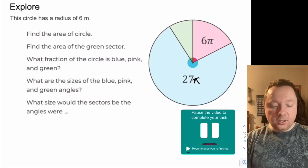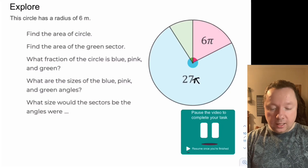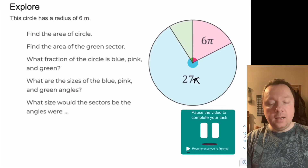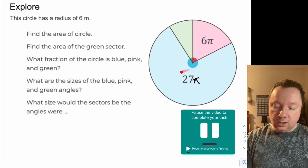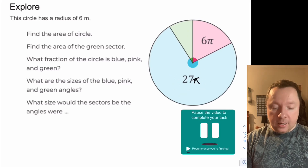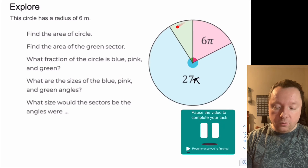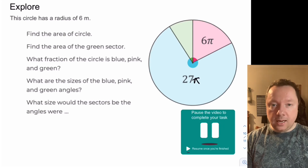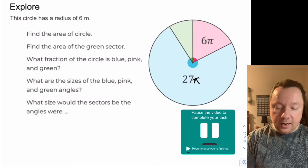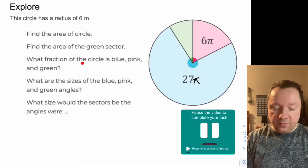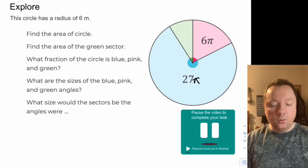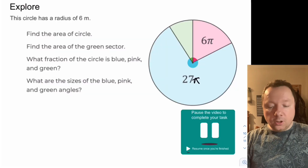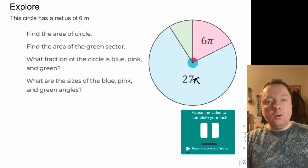Your last activity of today: the circle has a radius of 6 metres. The area of the pink section is 6 pi and the area of the blue section is 27 pi. Work out the area of the whole circle — give it in terms of pi. Then find the area of the green section, what fraction of the circle is each colour, and what are the sizes of the blue, pink and green angles. Pause the video here and give that a go — it's a little bit of a puzzle.